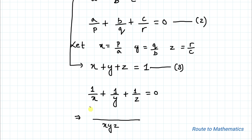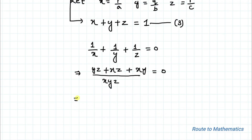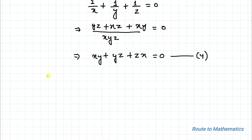Now let's simplify the equation by taking LCM. We have xyz in our denominator, and in the numerator we have yz + xz + xy = 0. This implies xy + yz + zx = 0. Let's call this equation 4.